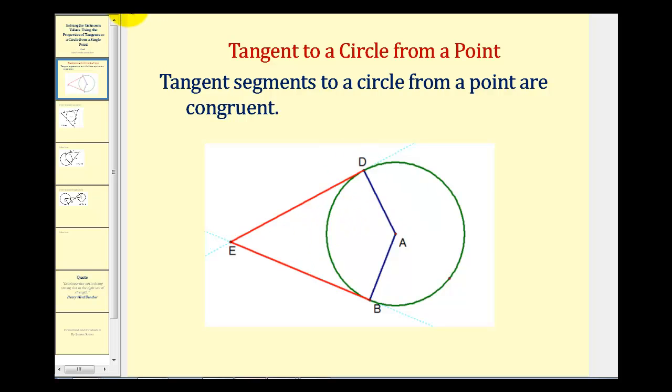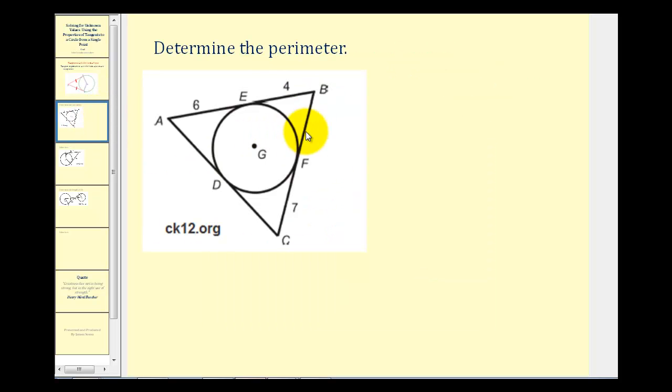So in this diagram here, these two red segments are congruent. Let's take a look at our examples. Here we want to determine the perimeter of this triangle.